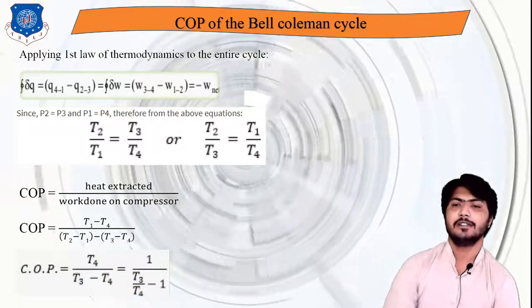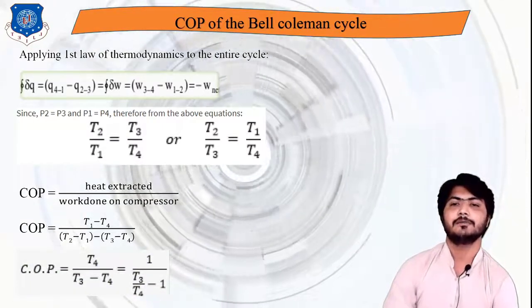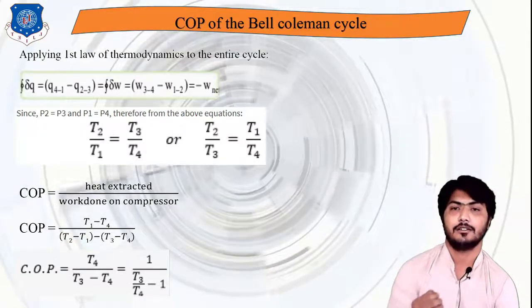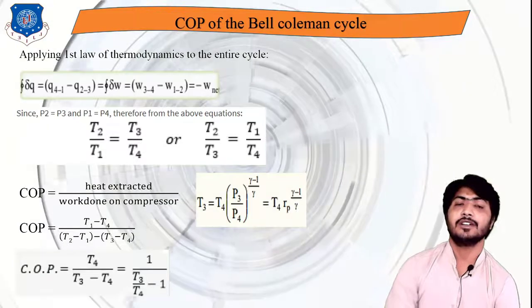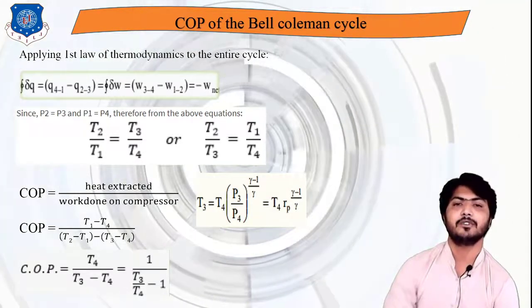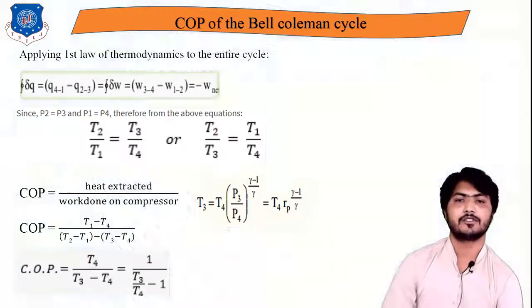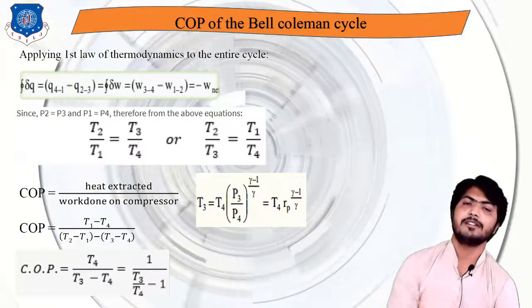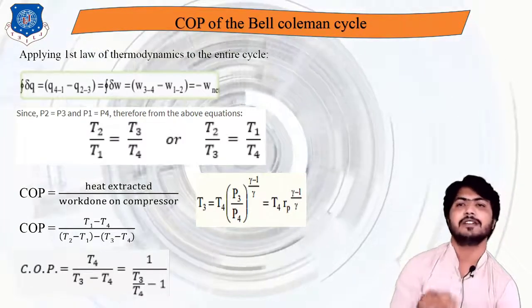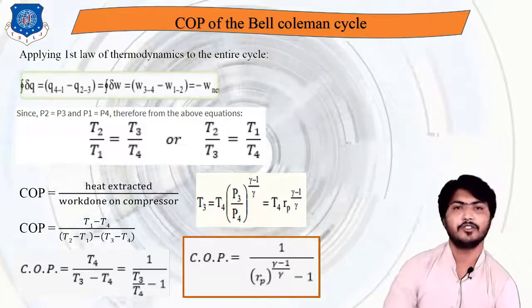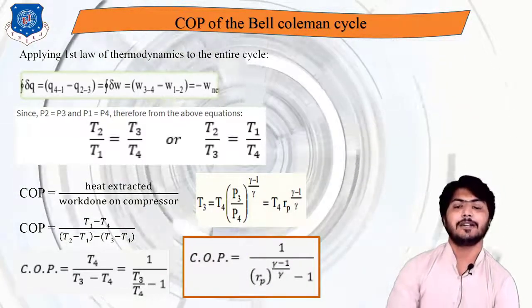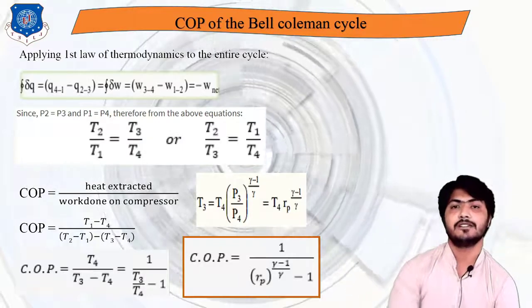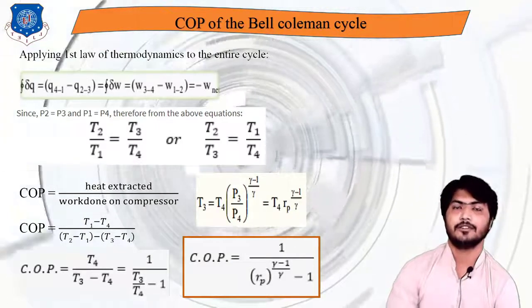Using the isentropic relation, T3 = T4 × Rp^((γ−1)/γ), where Rp = P2/P1 = P3/P4 is the pressure ratio. Substituting, the final COP of the Bell-Coleman cycle is: COP = 1 / [Rp^((γ−1)/γ) − 1]. This is the main theoretical COP formula for the Bell-Coleman cycle. Thank you.